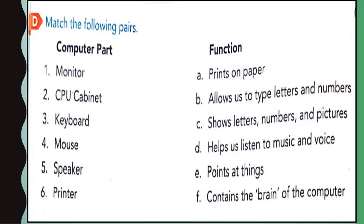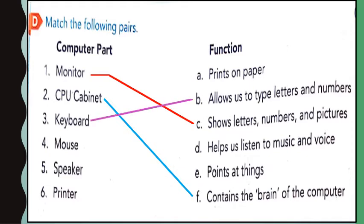D. Match the following computer parts with its function. First: monitor — shows letters, numbers and pictures. Second: CPU cabinet — contains the brain of the computer. Third: keyboard — keyboard allows us to type letters and numbers. Fourth: mouse — a mouse points at things on the monitor. Fifth: speaker — a speaker helps us listen to music and voice. Last: printer — prints on the paper.